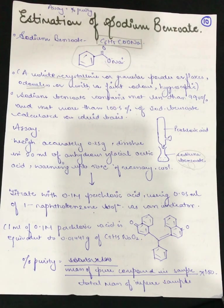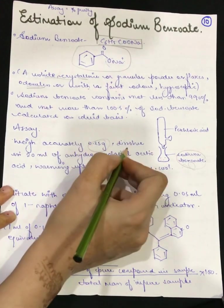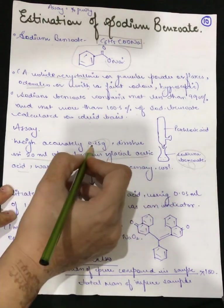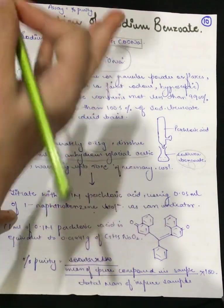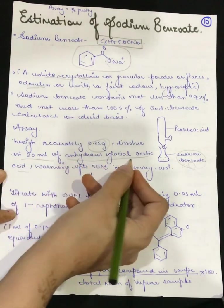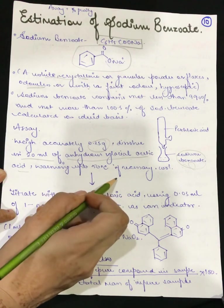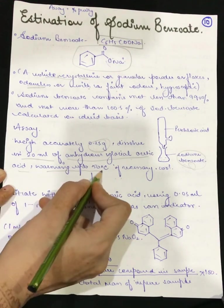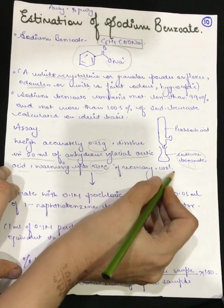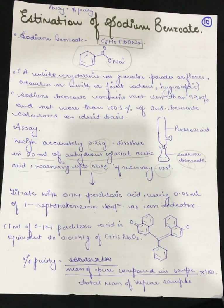This procedure: first, we will weigh accurately 0.25 gram dissolved in 20 ml of anhydrous glacial acetic acid. So 0.25 gram of sodium benzoate we will dissolve in 20 ml of anhydrous glacial acetic acid, warming up to 50 degrees if necessary, then cool at room temperature.